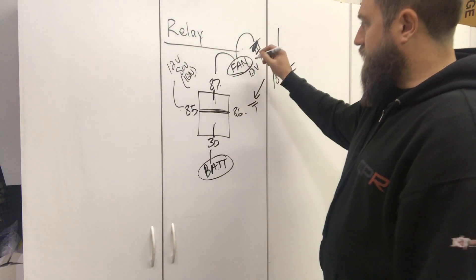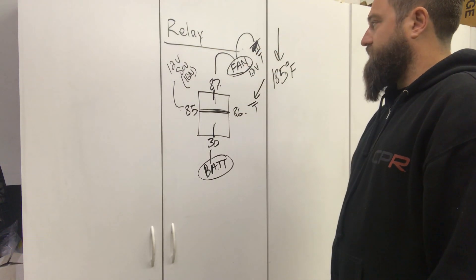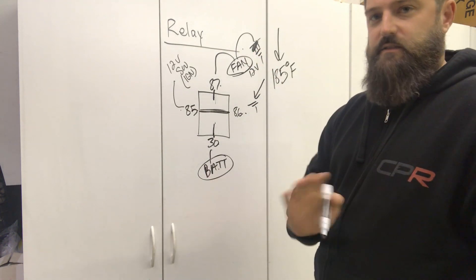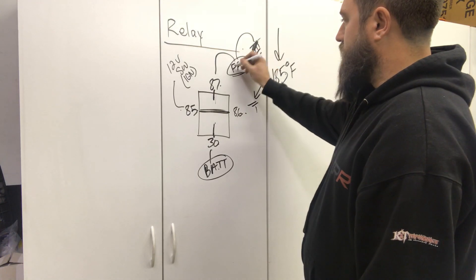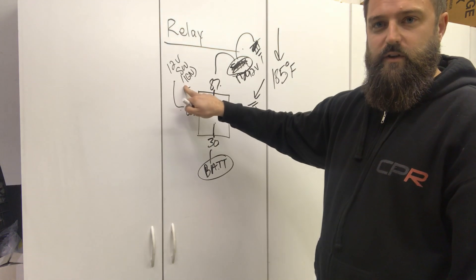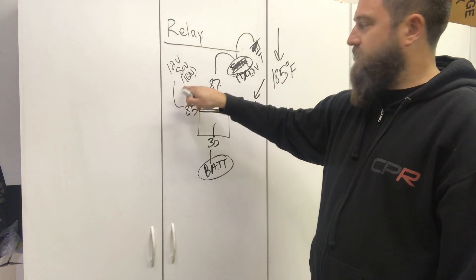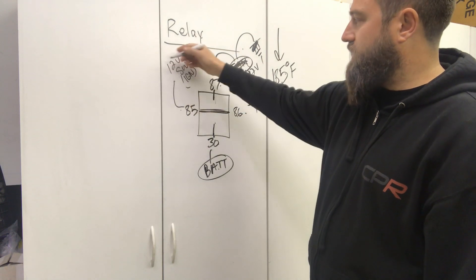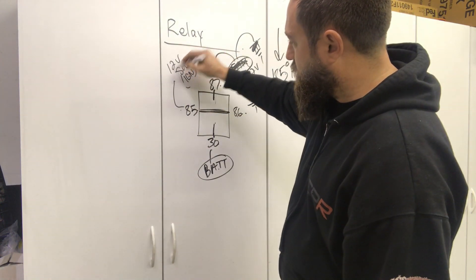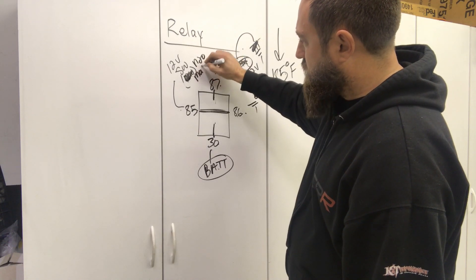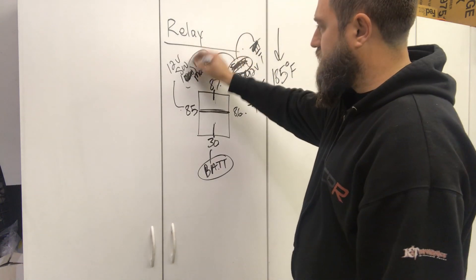You could do this for a bottle heater for nitrous, a nitrous solenoid, etc. Let's say this is going to be something for nitrous. Now instead of having a 12-volt ignition switch here, you can have your nitrous master arm switch here. So 12-volt switch, nitrous master, we'll call this.